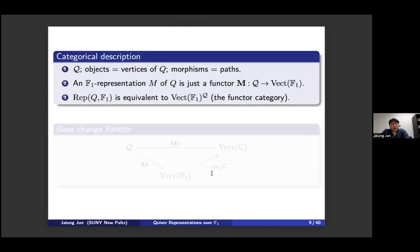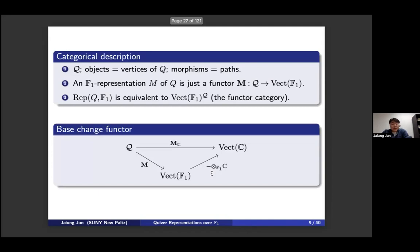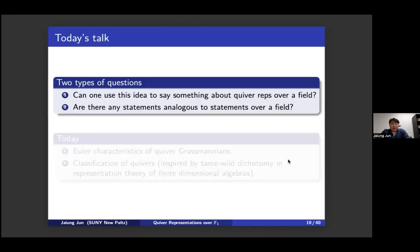One can also describe everything categorically. Given a quiver Q, you form a category whose objects are vertices and morphisms are paths. Then an F1 representation is a functor from this category to F1 vector spaces, and the category of F1 representations is the functor category. The base change functor can then be seen as composition, since quiver representations over a field can also be viewed as functors.